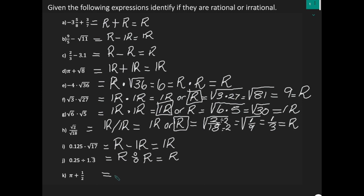For the last one, K, we have pi. We know pi is irrational. And I'm adding it to a half, which is a fraction. All fractions are rational. And an irrational plus a rational is irrational.